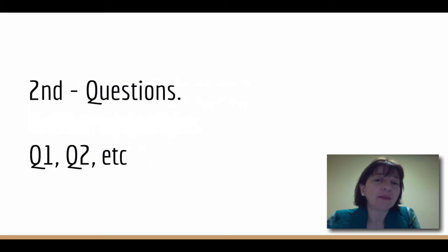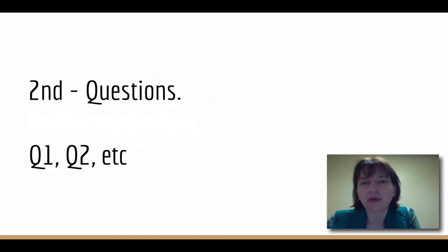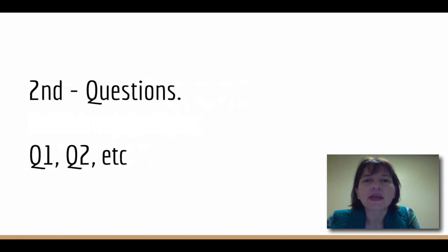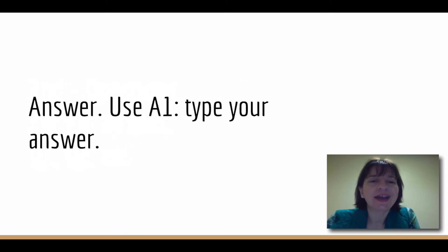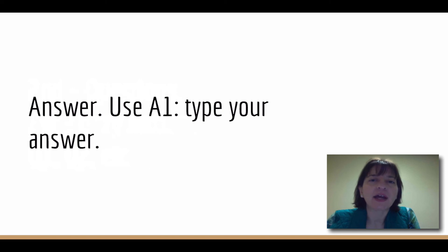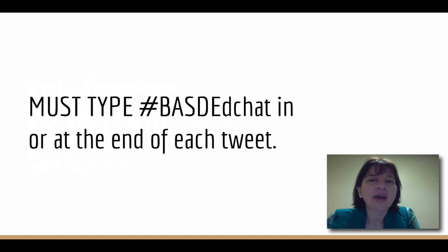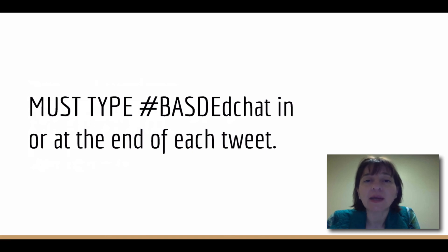I'm going to put out some questions — there will be five questions, we'll see if we have enough time for all five. I will start each question with the letter Q and a number, so Q1 for question 1, Q2 for question 2, so you can keep track of which question we're answering. Your job will be to answer the question and put an A with the corresponding number — so if I ask Q1, you start your tweet with A1 — so we can keep track of which question you're answering. Make sure to type the BASDEdChat hashtag somewhere in the tweet. It doesn't have to be at the end; it could be anywhere, so that it will be included in the chat and other people can find it.